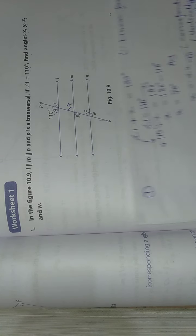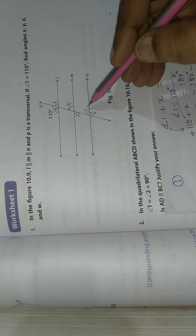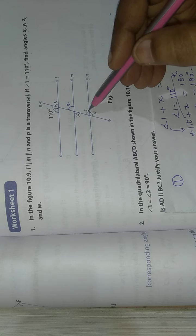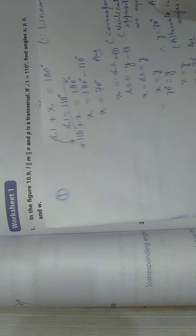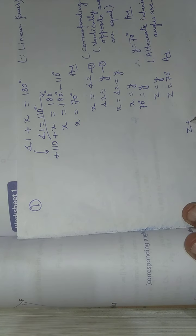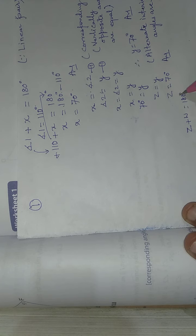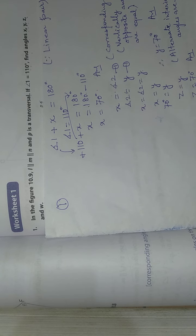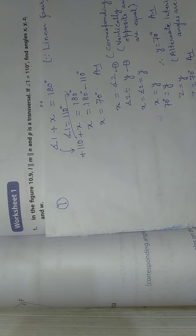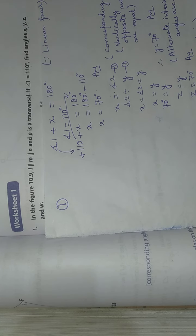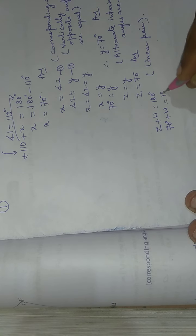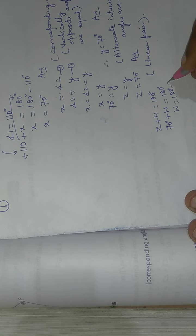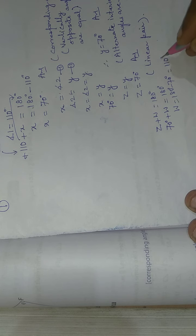All three values X, Y, and Z are 70 degrees. Now we need to find W. Z and W together form a linear pair, so angle Z + angle W = 180 degrees. Since Z = 70 degrees, W = 180 − 70 = 110 degrees.